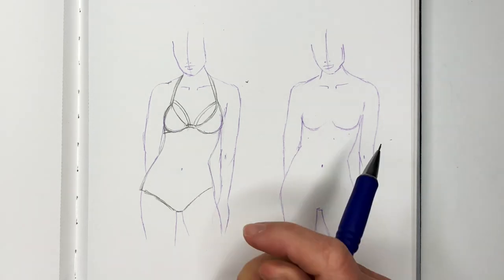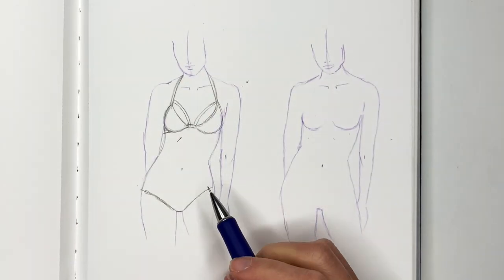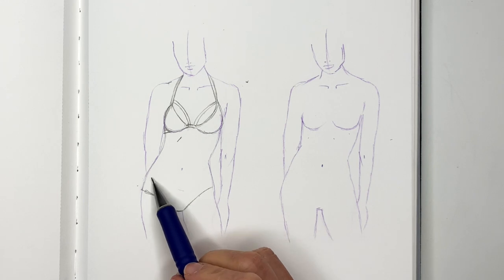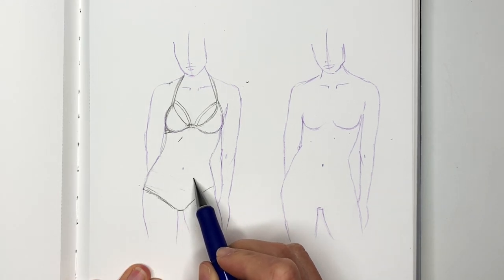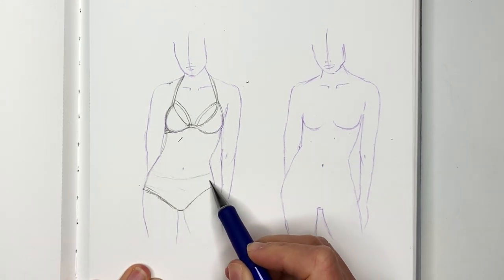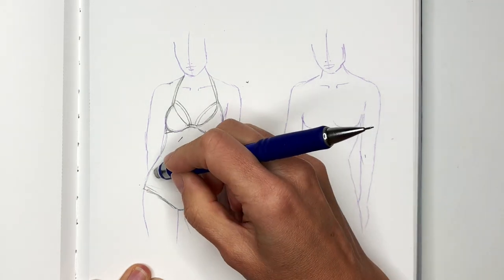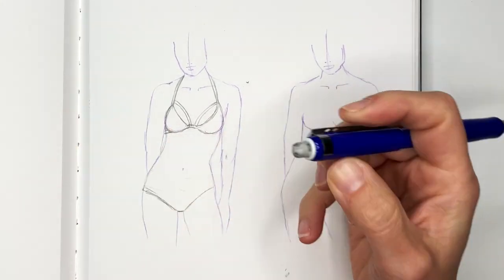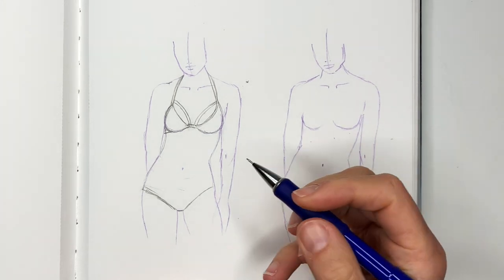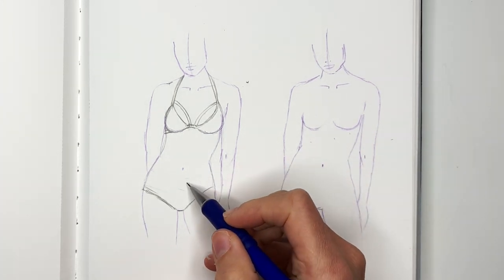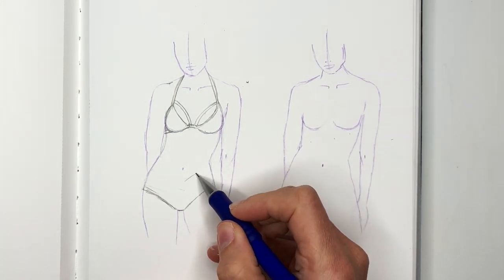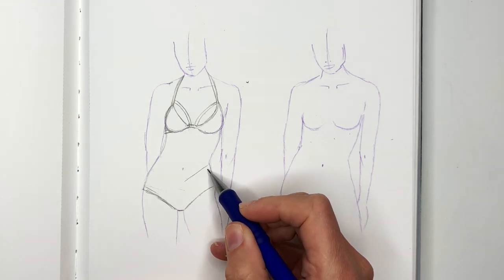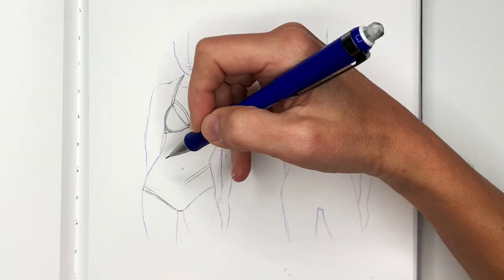Now to make it a bikini, you just need to pick where you're going to end your underwear. You can have a low one like this, maybe cut it out more. I'm going to make mine strappy to match the top, so I'm going to draw straps that connect.